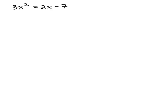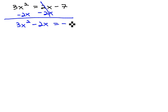The first part of setting up is to separate the variables from the numbers, putting the variables on one side and everything else on the other side. In this case, we can get the variables all on the left side by subtracting 2x from both sides. That gives us 3x squared minus 2x equals negative 7.